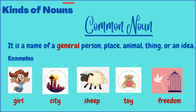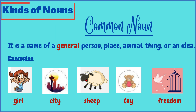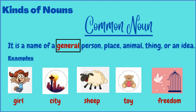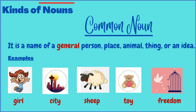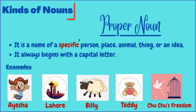A common noun is the name of a common or general person, place, animal, thing, or an idea. Examples include: 'girl,' which is a common noun as it refers to any girl and not a particular one; 'city,' which may refer to any city; 'sheep,' referring to any sheep, not a specific one; 'toy,' referring to any toy; and 'freedom,' also a common noun referring to general freedom.